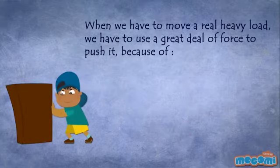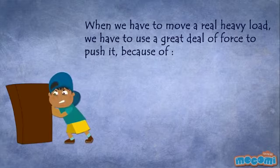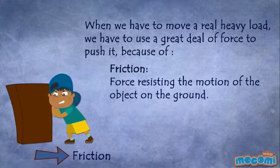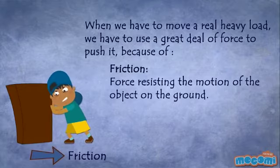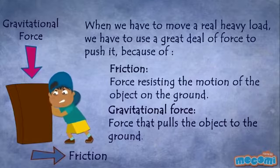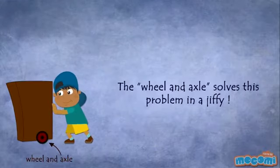When we have to move a real heavy load, we have to use a great deal of force to push it. This is because of friction, which is the force resisting the motion of the object on the ground, and gravitational force that pulls the object to the ground. The wheel and axle solves this problem in a jiffy.